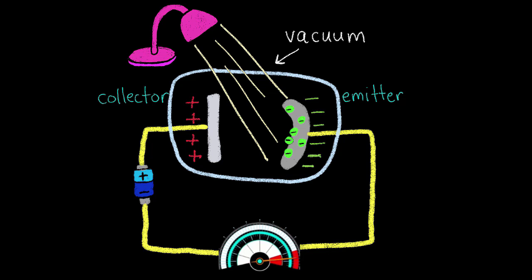The flow of electrons produces a current, which is recorded by the ammeter. The bigger the current, the more electrons jumping off.